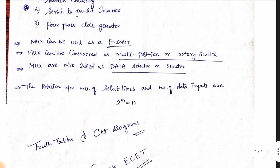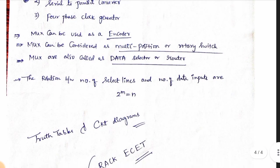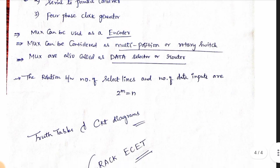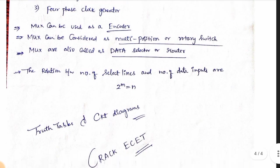Mux is also known as data selector or router. The relation between the number of selection lines and the number of data lines is: 2 to the power of m is equal to n.